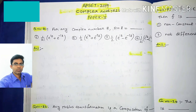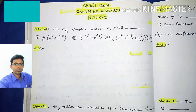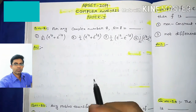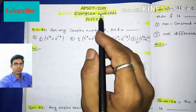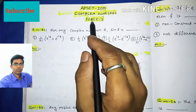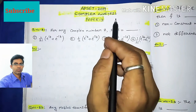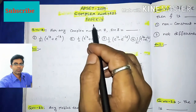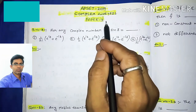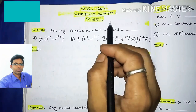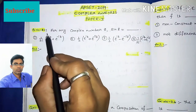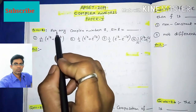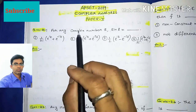Hi everyone, this is Ramakrishna. Welcome to my channel. In this video I'm going to discuss CSIR-NET 2019 complete solutions of complex analysis from Paper 2. The first question is question number 21.